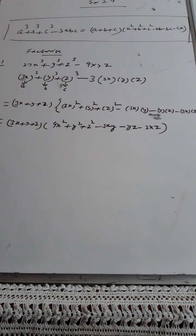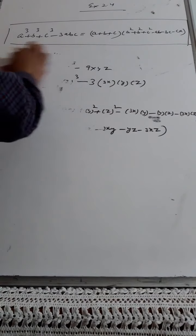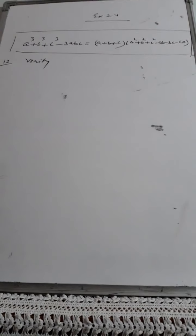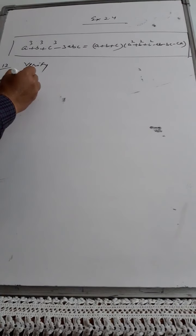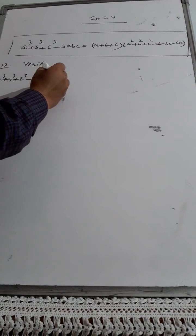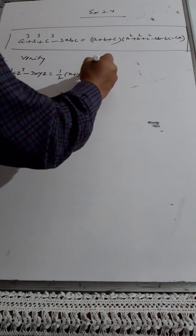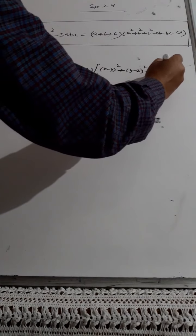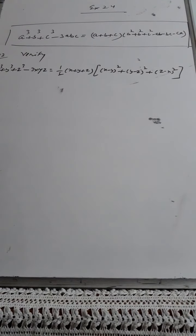Now let us go to Question 12, which is based on verification. Whenever you have to verify, keep a watch on your left-hand side and right-hand side. Verify: x³ + y³ + z³ - 3xyz = ½(x + y + z)[(x - y)² + (y - z)² + (z - x)²]. The left-hand side is x³ + y³ + z³ - 3xyz.